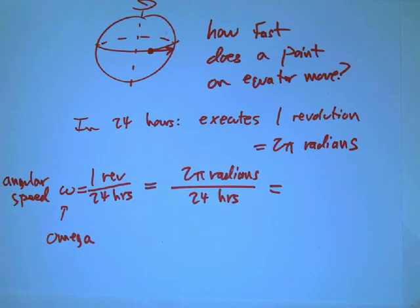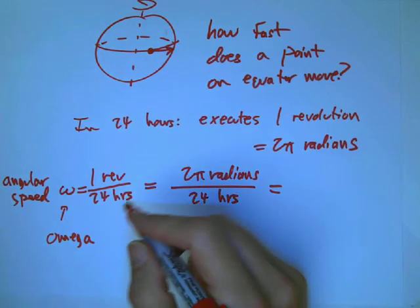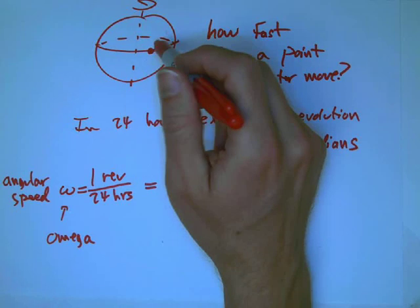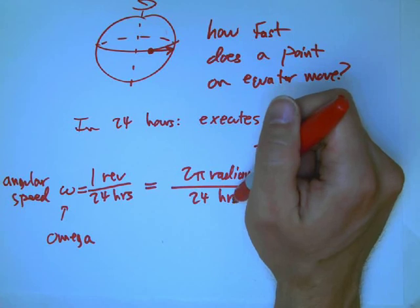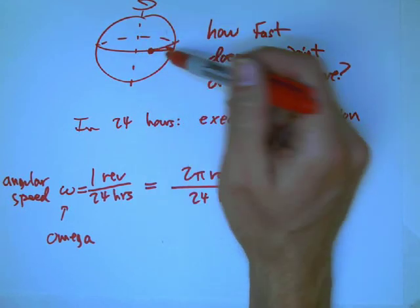Okay, continuation of arc length and angular speed, just a couple more minutes. I want to finish up this example. This notion of angular speed is how many revolutions or how many radians worth of angle do you do in a certain amount of time, and it has nothing to do with how big the circle is that you're on.